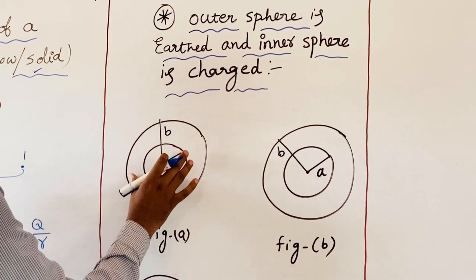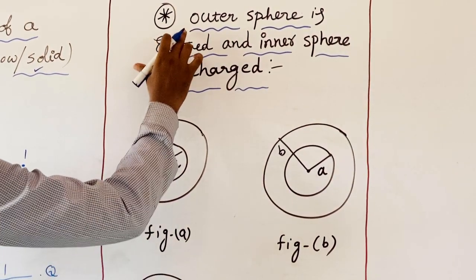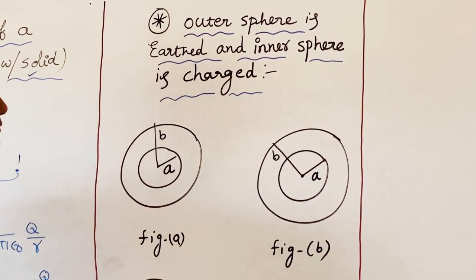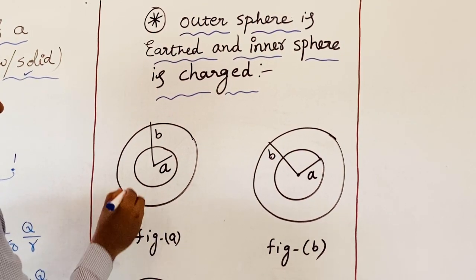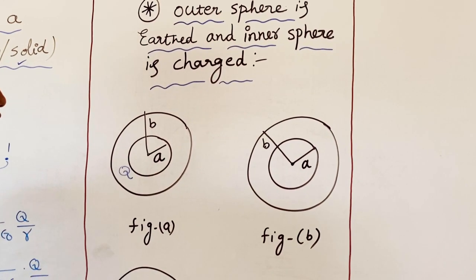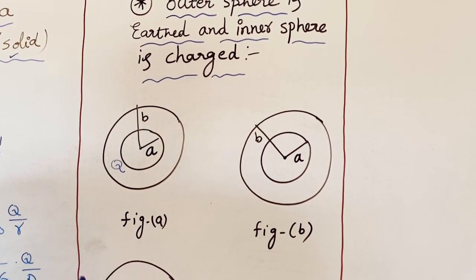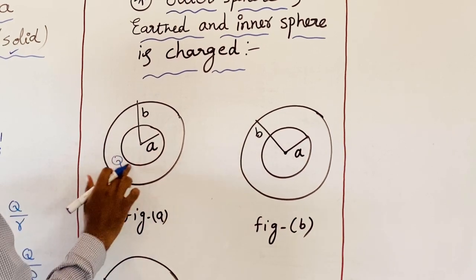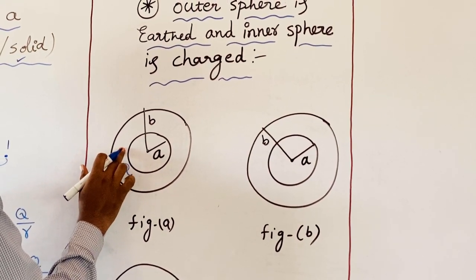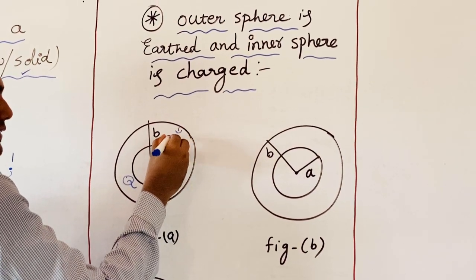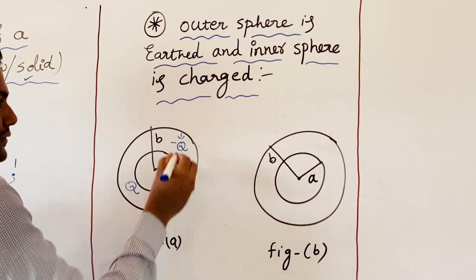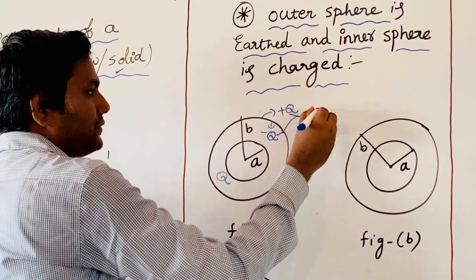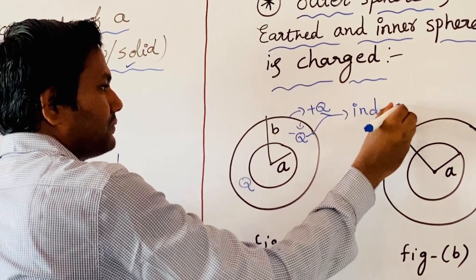Now regarding the condition of the spherical plates: the outer sphere is earthed and the inner sphere is charged. So when we give charge Q to the inner sphere, automatically the total charge Q lies on the outer surface of the inner sphere. On the inner surface of the outer sphere it becomes minus Q, and on the outer surface of the outer sphere it becomes plus Q. These plus Q and minus Q are developed because of induction.